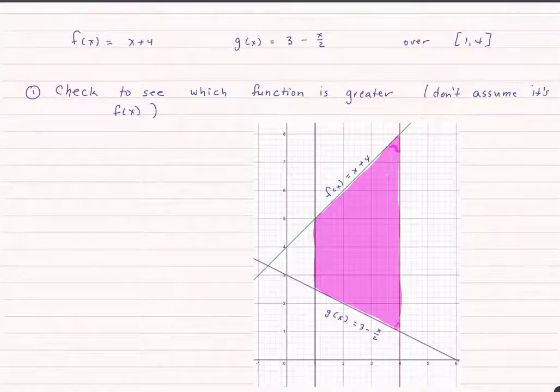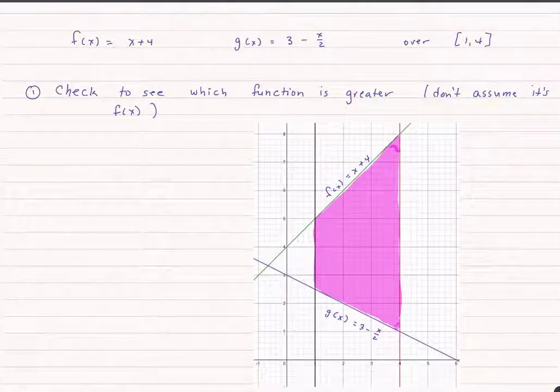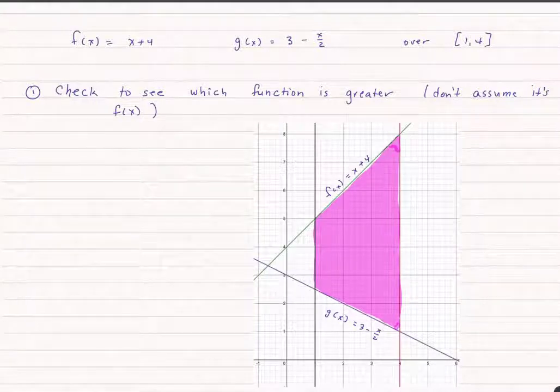Let's do a quick example. Let's say f of x equals x plus 4, and g of x is 3 minus x over 2, and we're looking at the range from 1 to 4. The first thing we need to do is make sure which function is greater.